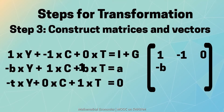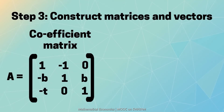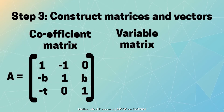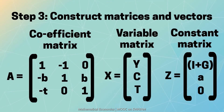Let us name the matrix of coefficients as A. Similarly, vector of variables may be constructed as x is equal to Y, C, T and vector of constants may be written as z is equal to I plus G, A, 0.